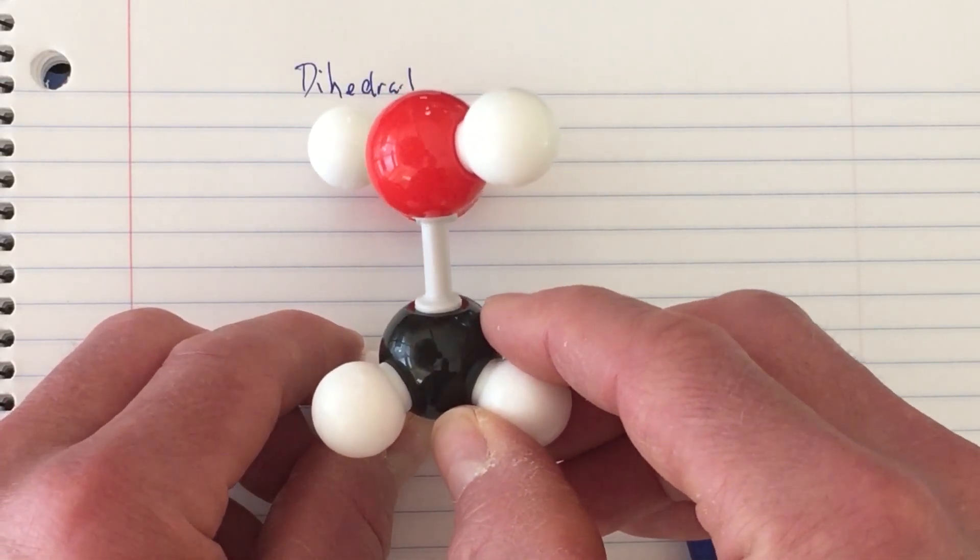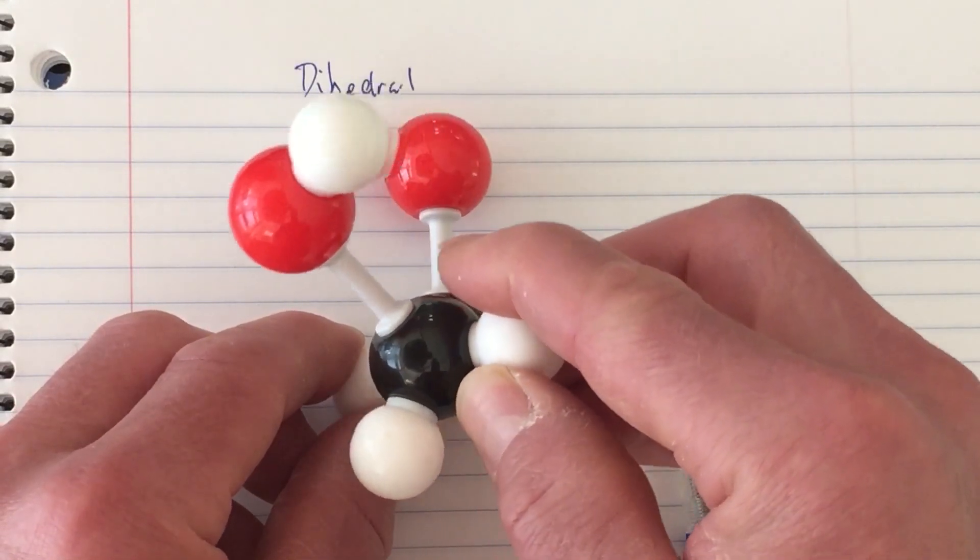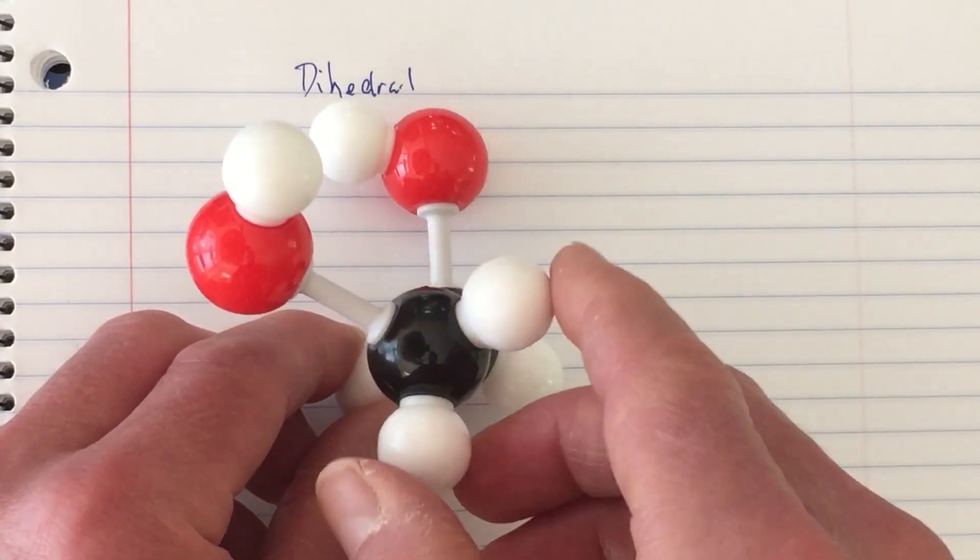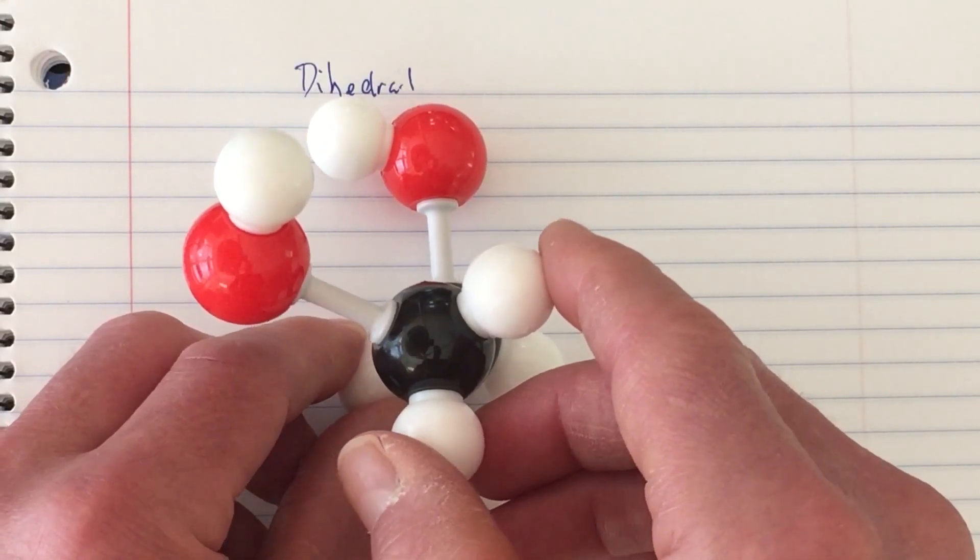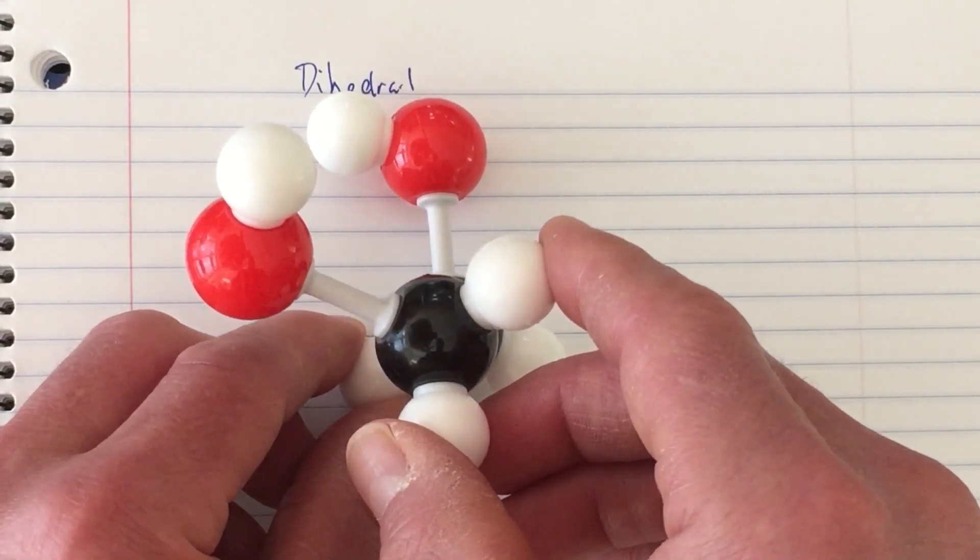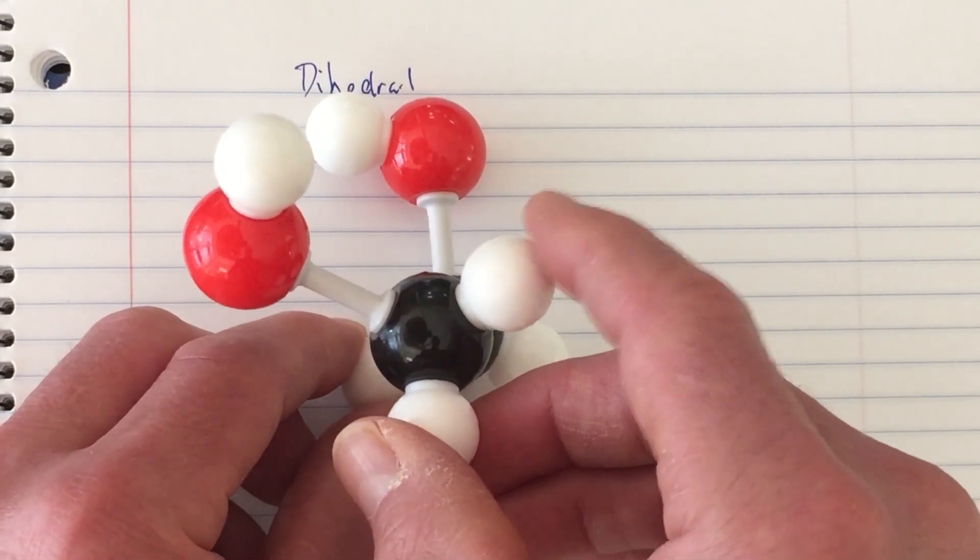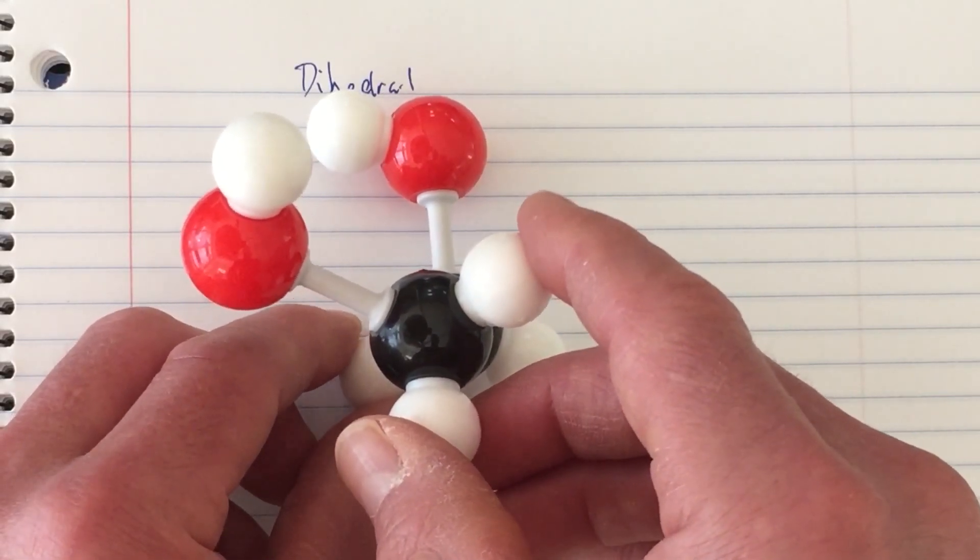In this orientation, we have a value of about positive 60 degrees for the dihedral angle, the so-called gauche conformation. That is energetically more favorable than the eclipsed value.